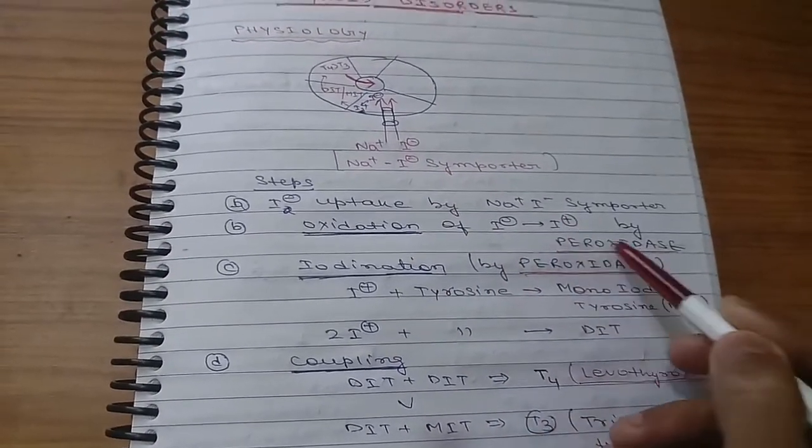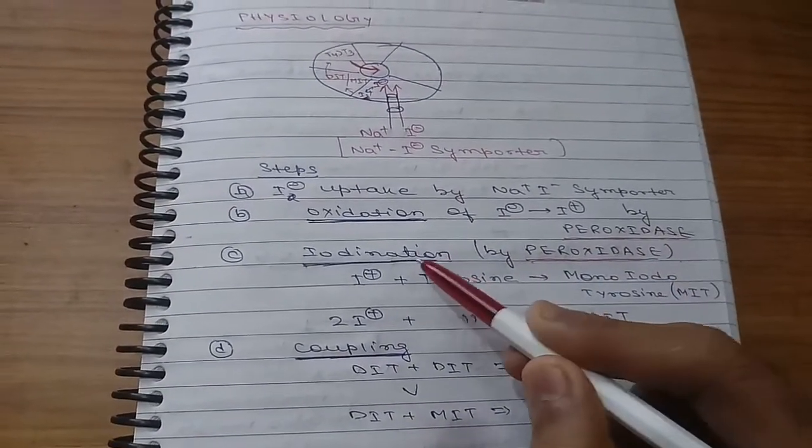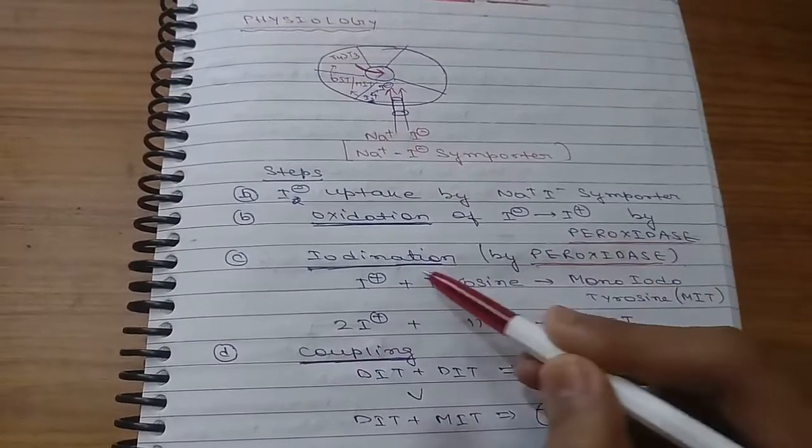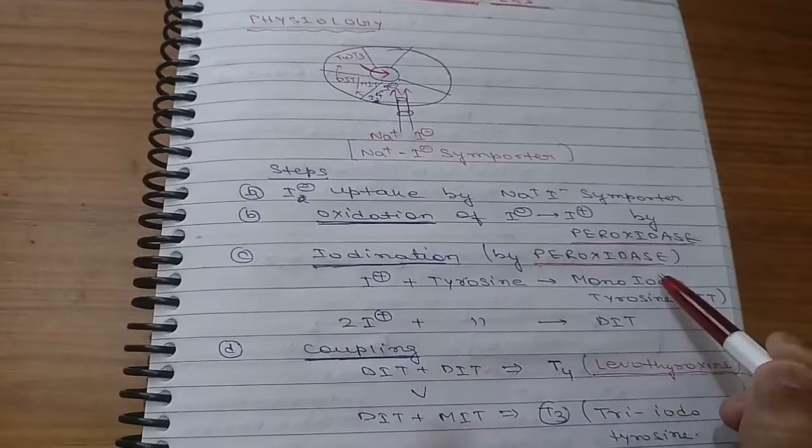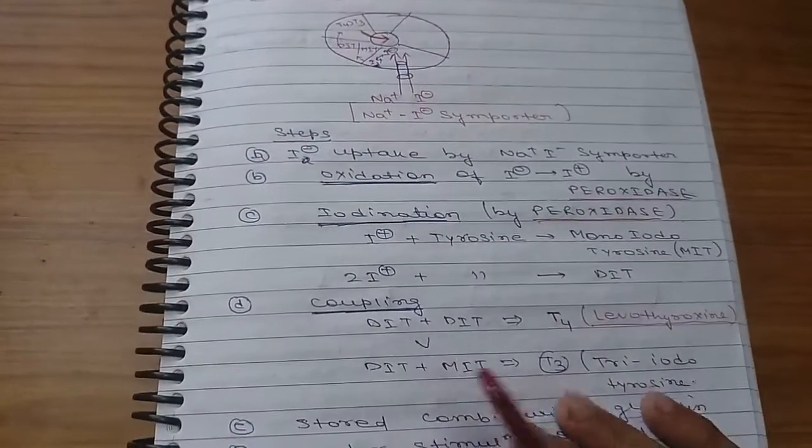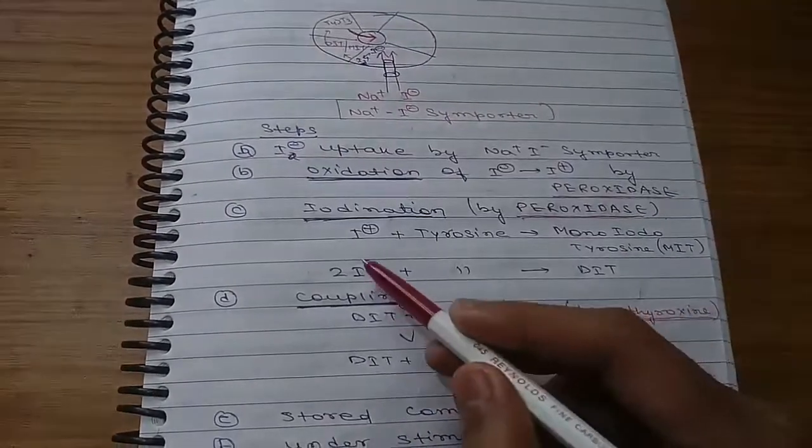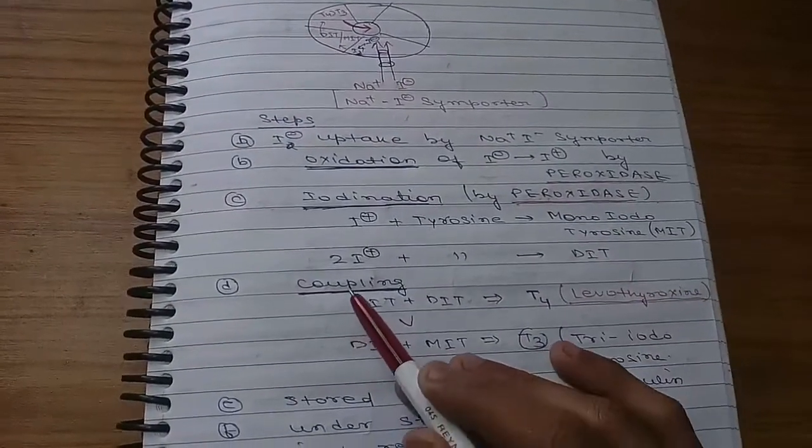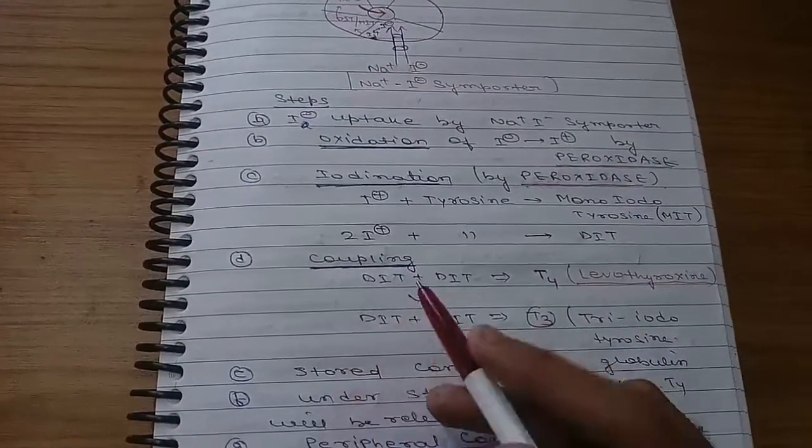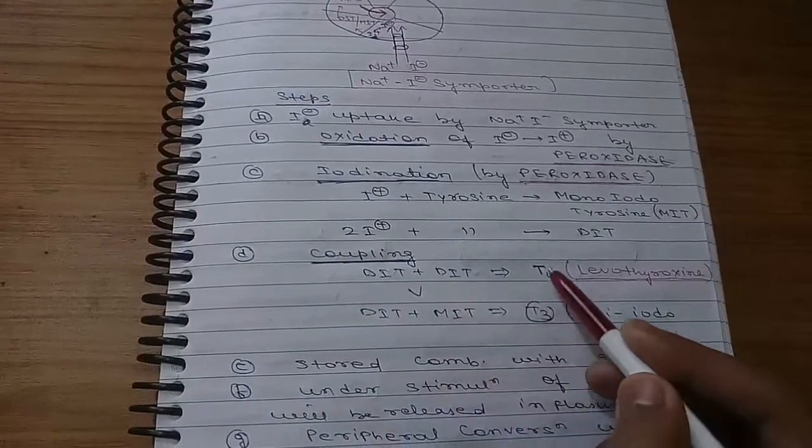After oxidation, there will be iodination. Iodine is added to tyrosine and there will be formation of monoiodotyrosine (MIT). If two iodines combine with tyrosine, then there will be formation of diiodotyrosine (DIT). The fourth step is coupling. DIT plus DIT will combine to form T4, also called levothyroxine.